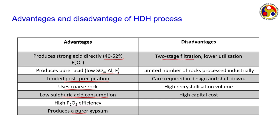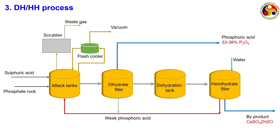The only issues with the hemi-dihydrate process are high capital cost due to two-stage filtration — first for hemihydrate, then for dihydrate — limited rock types are processed with this flow sheet, care is required in design and shutdown, high recrystallization volume, and high capital cost overall.